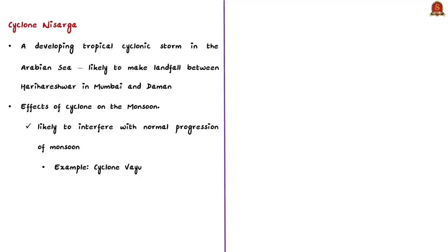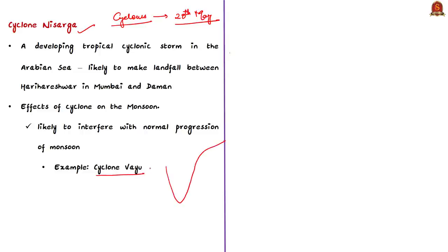Cyclone Nisarga is a developing tropical cyclonic storm in the Arabian Sea, moving northward at 4 km per hour and currently 550 km away from Mumbai. It is expected to make landfall on June 3rd along the Konkan coast. We have discussed cyclones and their formation in depth in our 20th May Hindu Analysis video. Cyclones emerging in the Arabian Sea during this time usually interfere with the normal progression of monsoon, possibly delaying or even breaking it. For example, cyclone Vayu last year formed a low pressure area just after the onset of southwest monsoon over Kerala, preventing monsoon winds from moving forward until the cyclone dissipated. Similarly, cyclone Nisarga is expected to break or delay the monsoon over the Indian landmass.